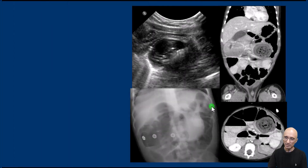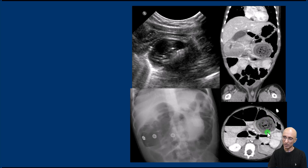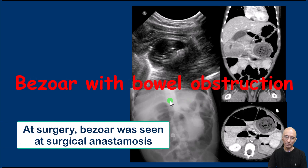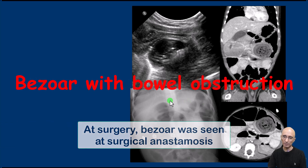To summarize, the child had a soft tissue density lesion on the radiographic examination, which on ultrasound had an arc-shaped surface with posterior acoustic shadowing. On CT, it demonstrated endoluminal particulate material with multiple internal locules of gas. Imaging findings are consistent with a bezoar causing bowel obstruction.